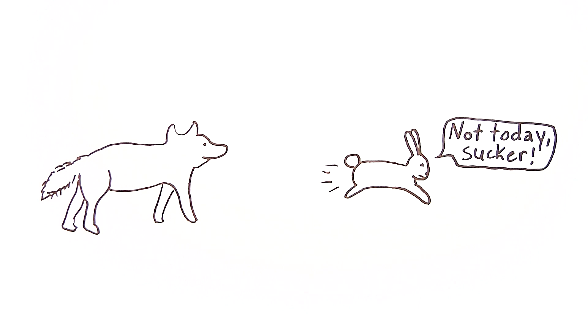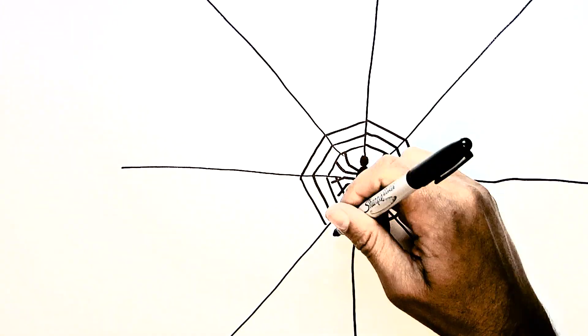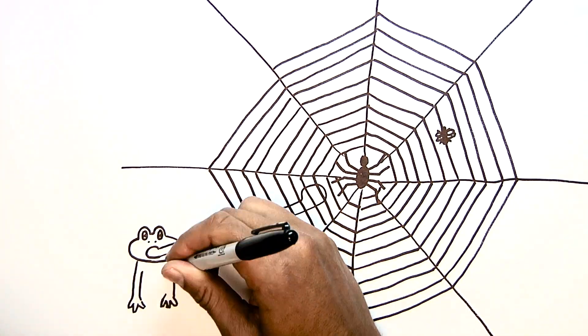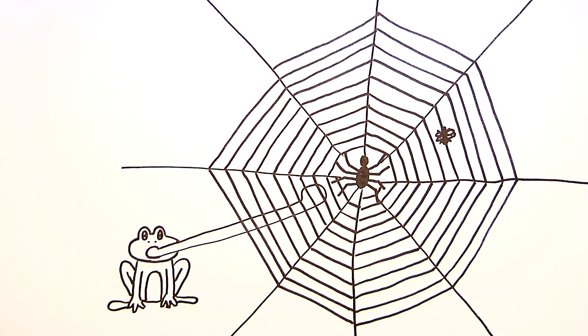Sometimes animals that are predators become prey themselves. A spider might spend its time making an intricate web to catch insects for dinner, only to become dinner for a hungry frog. In a complex food web, there are multiple levels of consumers.